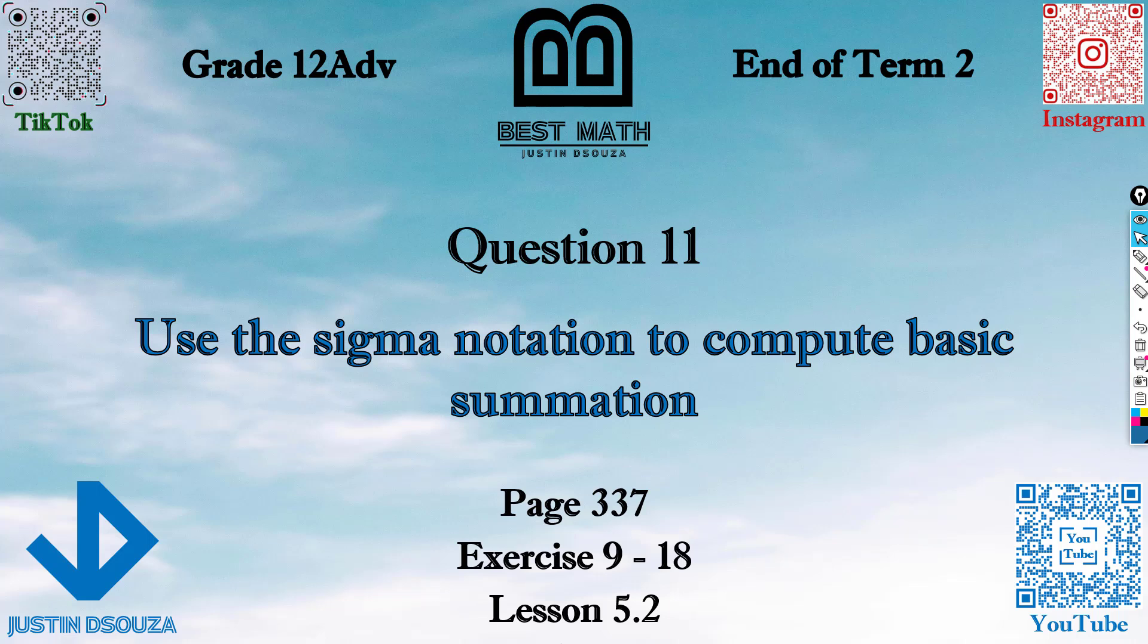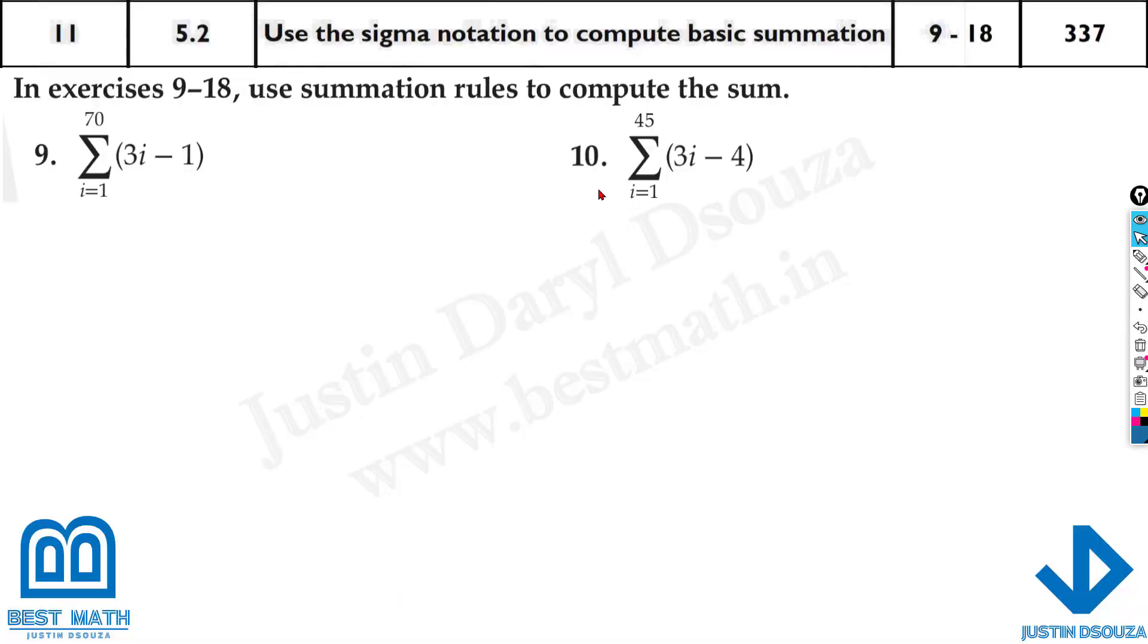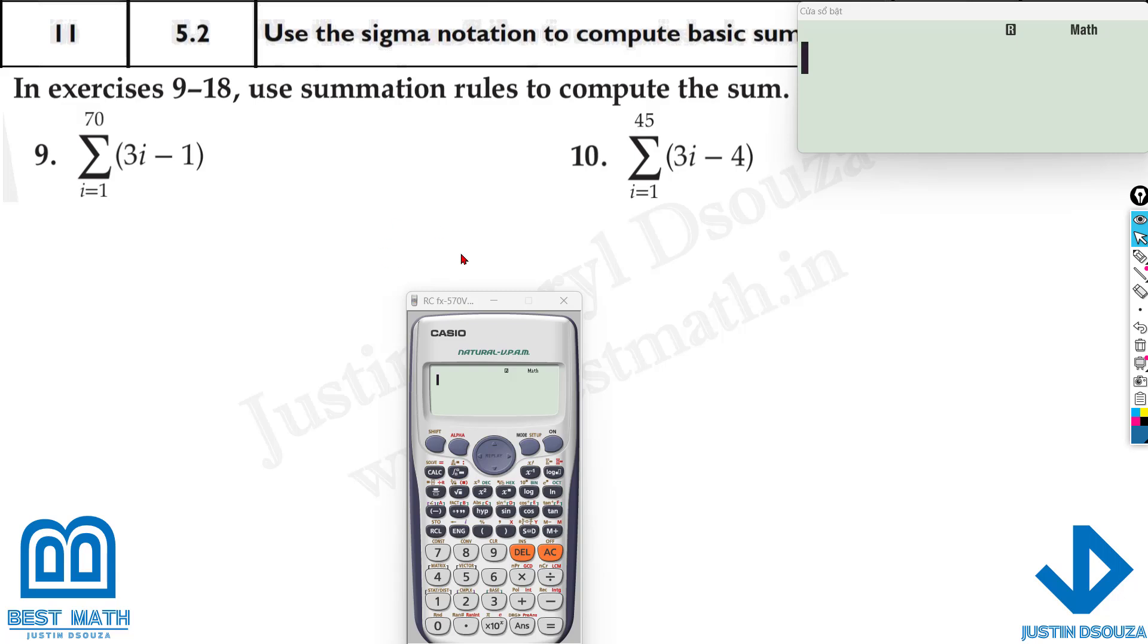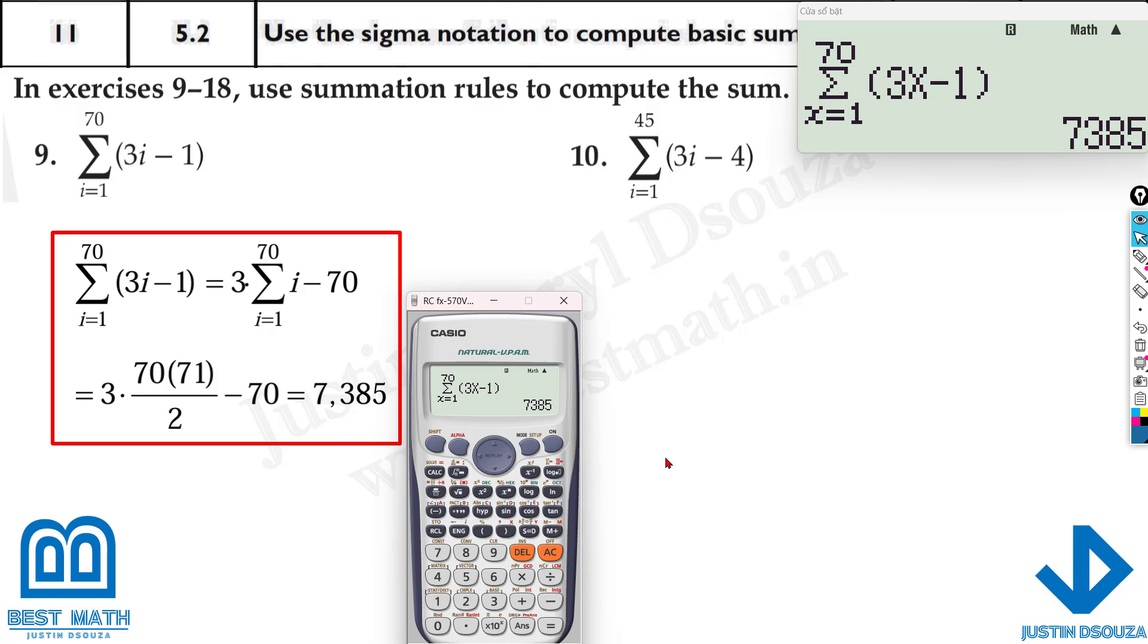The eleventh question is to compute the summation. It is from lesson 5.2. All these problems can be directly solved in calculator. All we have to do is use this summation notation. You can see over here if you press shift and this log symbol you get that. This i variable can be written in terms of x, because they have clearly mentioned x is equal to whatever the variable, just take it as x minus 1. It starts from 1 and goes until 70, and here we go, just in a few seconds you'll get the answer: 7385.